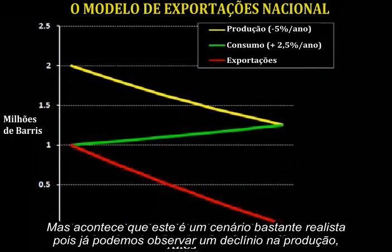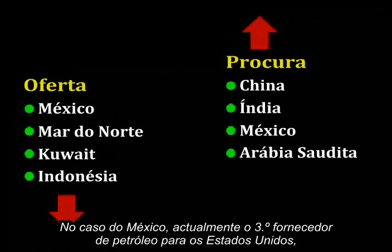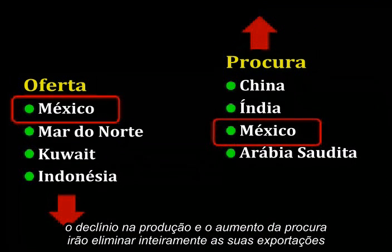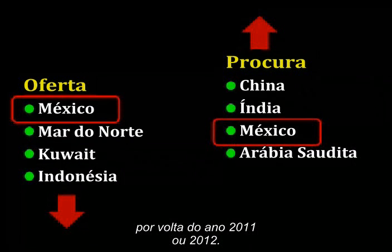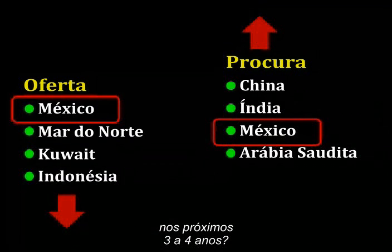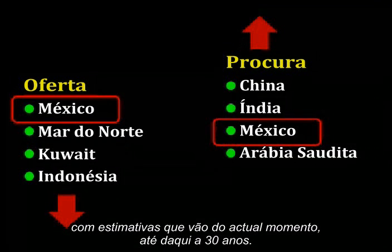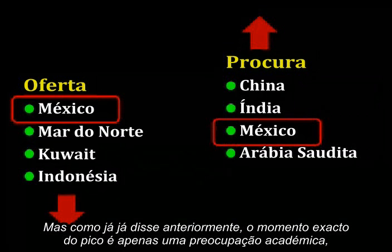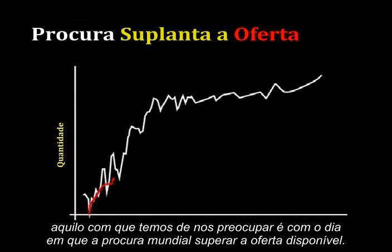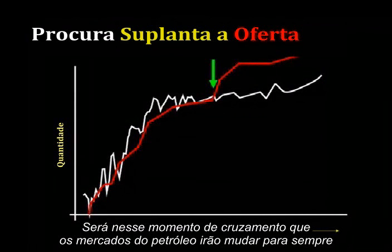It turns out that this is a very realistic scenario because we can already observe that production is declining even as demand is increasing in a number of countries. In the case of Mexico, currently the number 3 supplier of oil exports to the U.S., production declines and demand growth will entirely eliminate their exports by the year 2011 or 2012. Now where in the world is the U.S. going to find a brand new number 3 oil supplier in the next 3 to 4 years? What we need to be most concerned with is that day that world demand outstrips available supply. It is at that moment of crossover that the oil markets will change forever and probably quite suddenly.